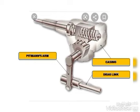Regarding the arrangement of all components in the recirculating ball type steering gearbox: the casing contains the pitman arm, sector, crossroad, nut, and ball assembly. The nut and ball assembly is placed on the worm.